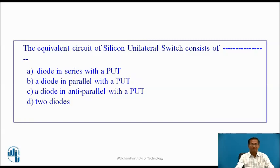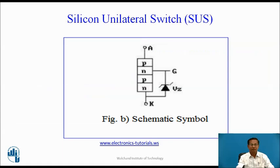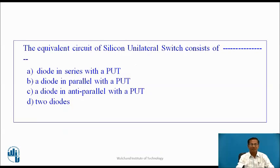The equivalent circuit of silicon unilateral switch consists of: option A, diode in series with a PUT; option B, diode in parallel with PUT; option C, diode in anti-parallel with PUT; option D, two diodes. It is similar to the PUT except that in between gate and cathode, a zener diode is connected. So, the option C is correct answer.